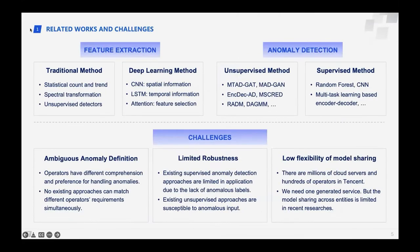Previous time series anomaly detection can be categorized into supervised and unsupervised methods. The few existing supervised methods extract features from time series and detect anomalies using feature vectors. Feature extraction approaches towards anomaly detection can be classified into traditional methods such as statistical count, trend, and spectral transformation, and deep learning methods which adopt CNN to extract spatial information, LSTM networks to extract temporal information, and attention mechanisms to stack features.